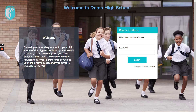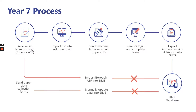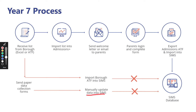Before we go any further, let's look at the overall process. After parents have applied through the local authority, schools would get a list as an Excel or ATF (Admissions Transfer File). Schools would then import the borough admissions transfer file or the Excel into SIMS, and at the same time they would send paper collection forms to parents to collect more up-to-date and additional information.